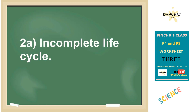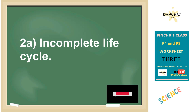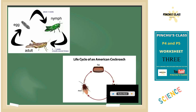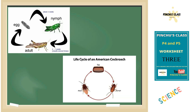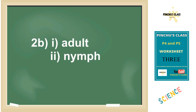Number two: we have a diagram showing the life cycle of an insect. Part A asks you to name the type of life cycle shown. That life cycle is an incomplete life cycle. Remember, an incomplete life cycle has only three stages.